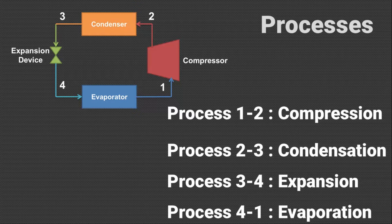By losing heat to the cooling media, the refrigerant gets condensed in the condenser. This liquid refrigerant is then throttled through the expansion valve, which is the process of expansion shown from 3 to 4. The refrigerant is throttled to low pressure in the evaporator. At such low pressure, this liquid refrigerant starts to evaporate, absorbing latent heat of evaporation from the surrounding space which is to be cooled. By absorbing heat from the space, the refrigerant evaporates and converts into vapor form. These vapors are then again passed to the compressor and in this way the cycle completes.